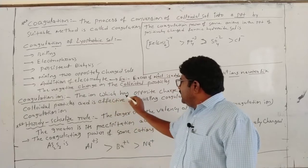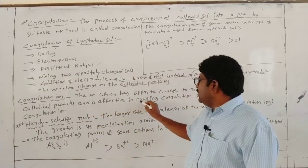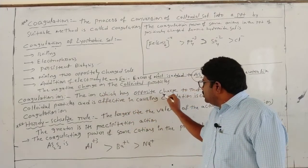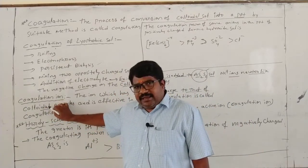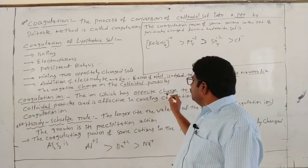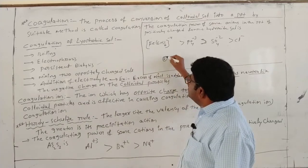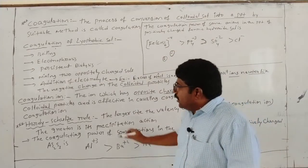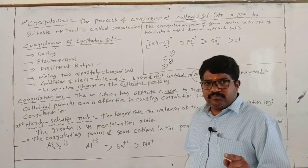Next, what is a coagulation ion? A coagulation ion is the ion which has opposite charge to the colloidal particles and is effective in causing coagulation. If colloidal particles have a positive charge, the coagulation ion should be negative. If the colloidal particles are negatively charged, the opposite charge is positive.